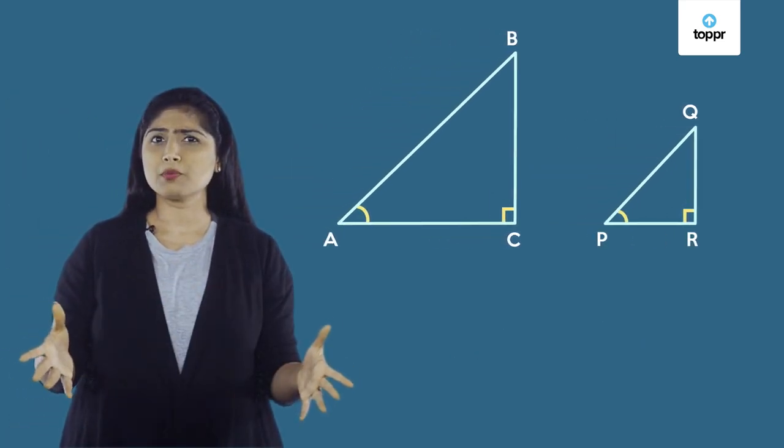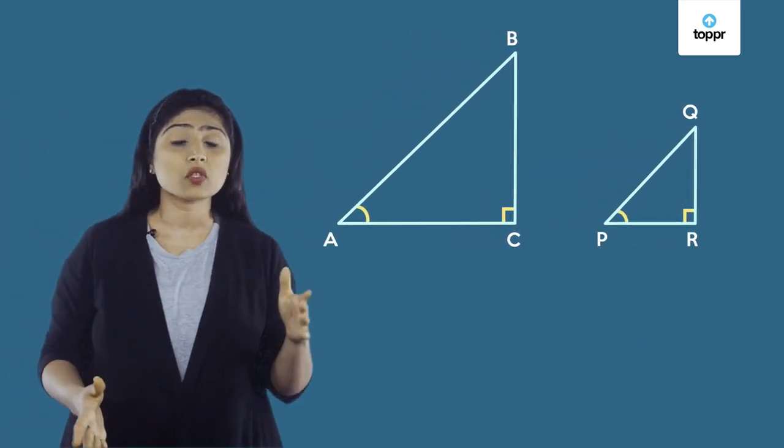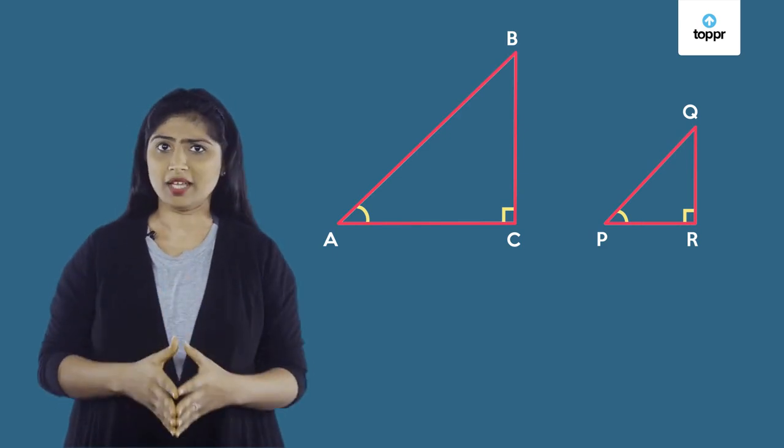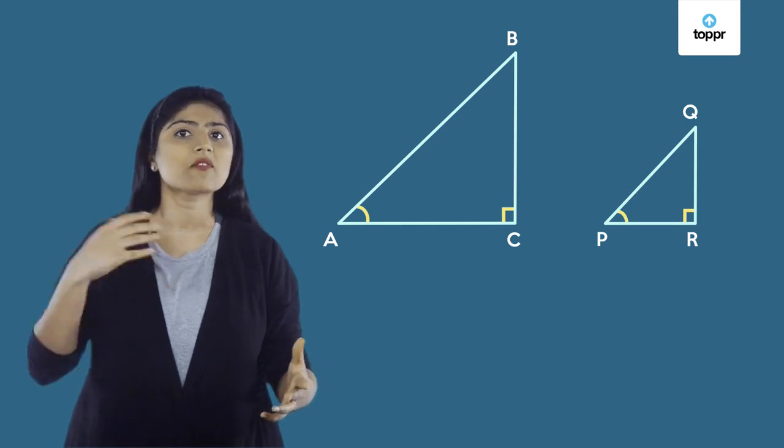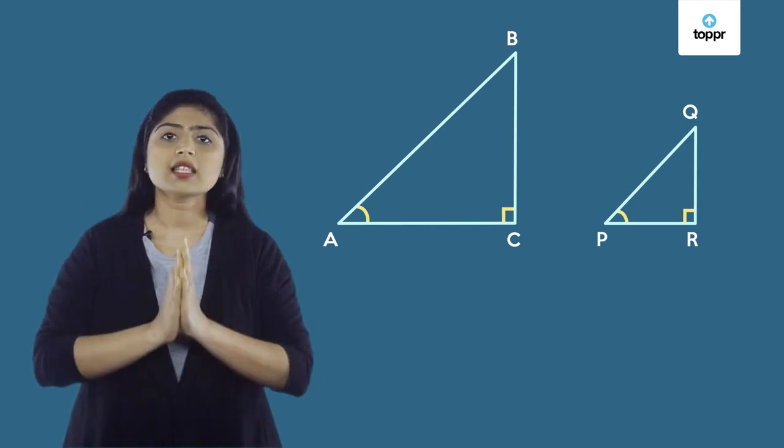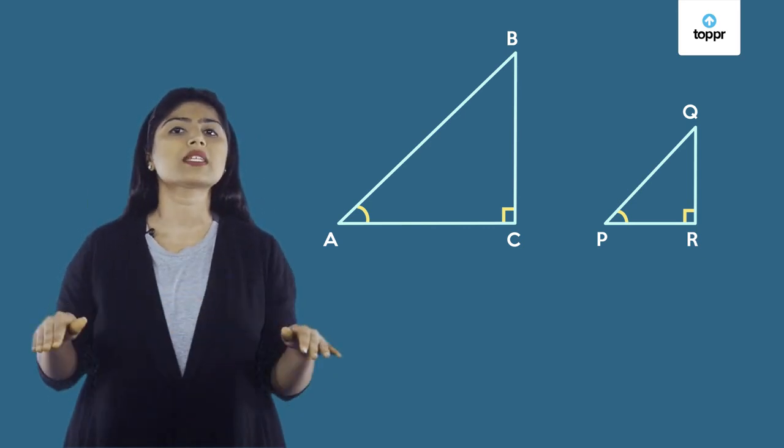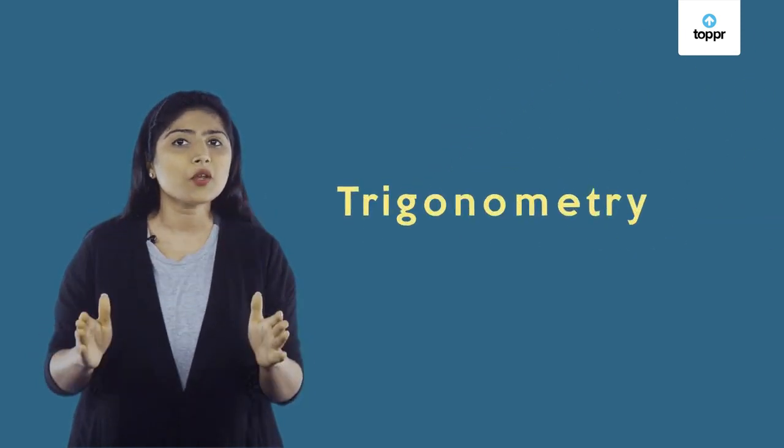Now, why did we take in particular the ratios of the sides of a right-angled triangle? Well, these ratios are so important in mathematics, physics, and engineering that there is a whole branch of mathematics based on them: Trigonometry.